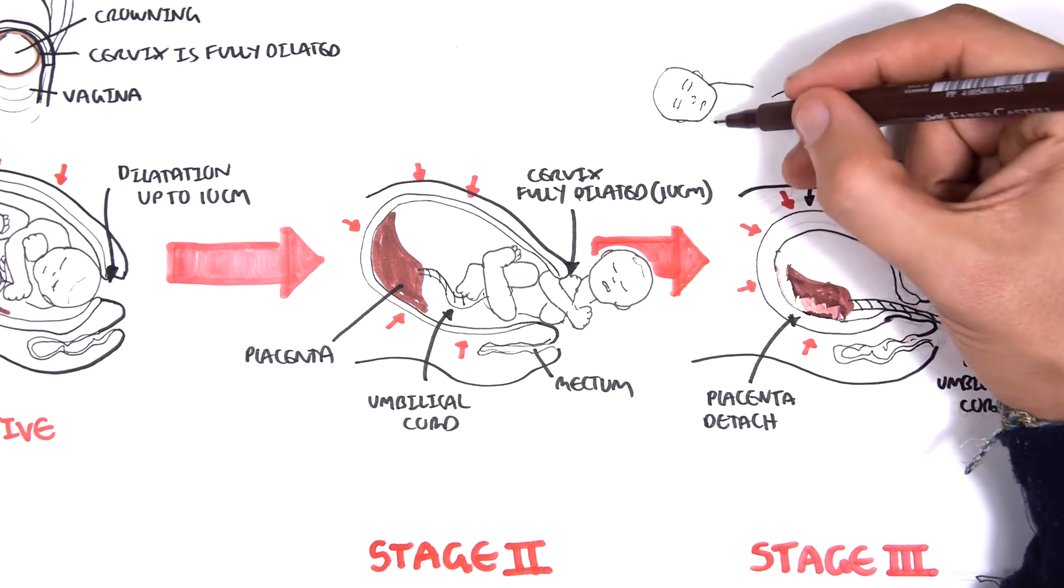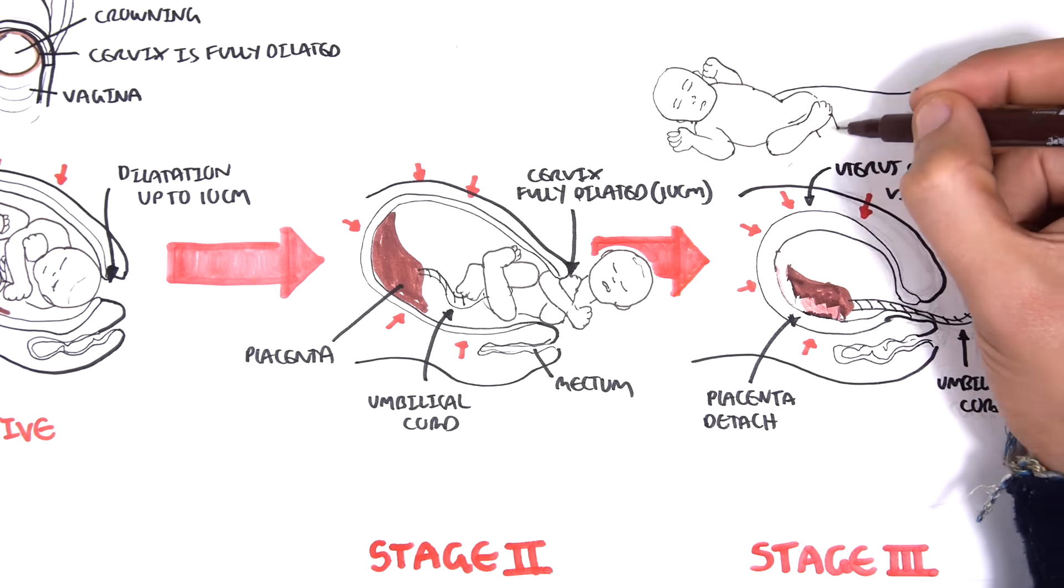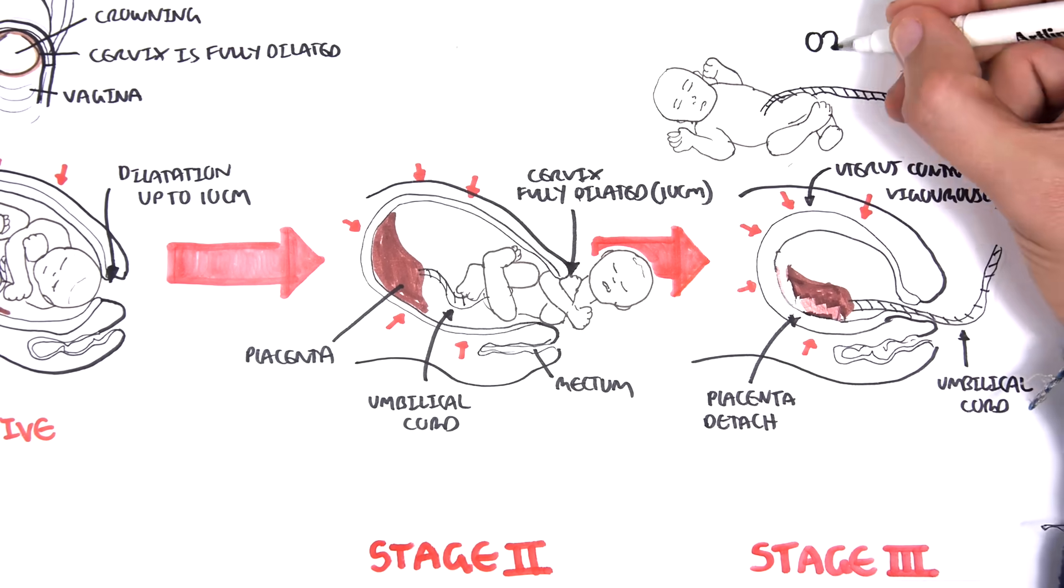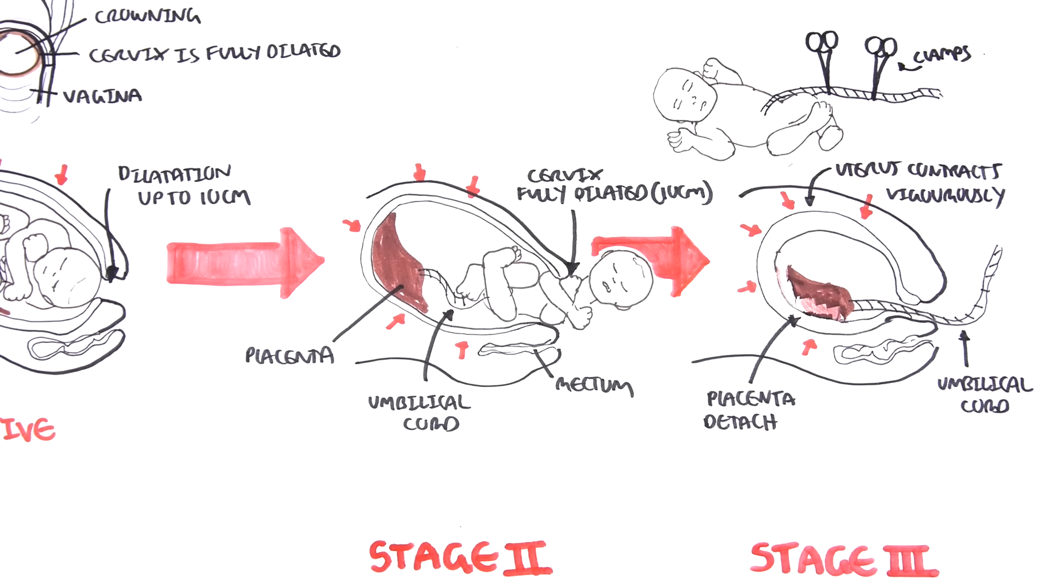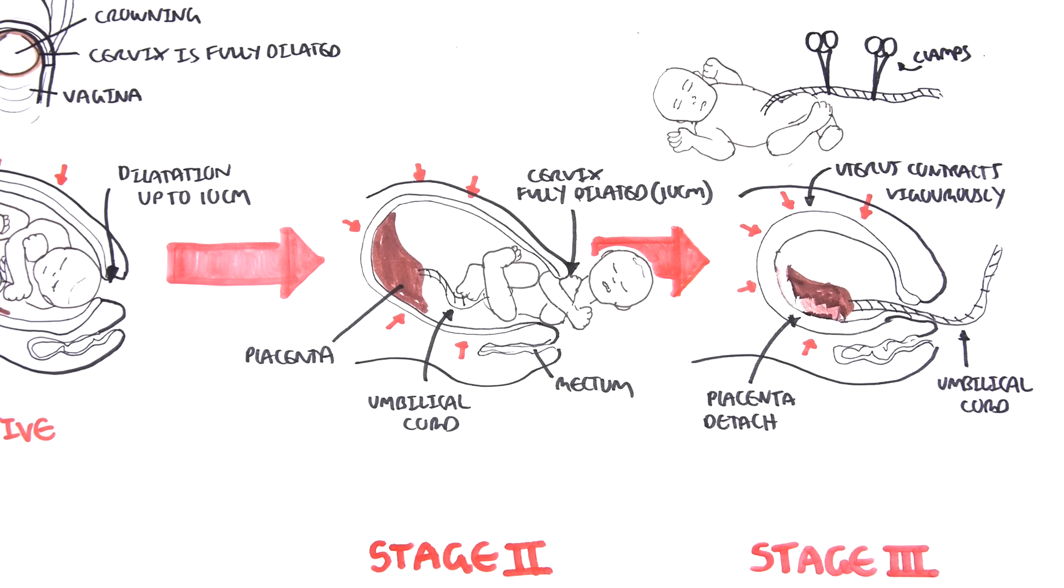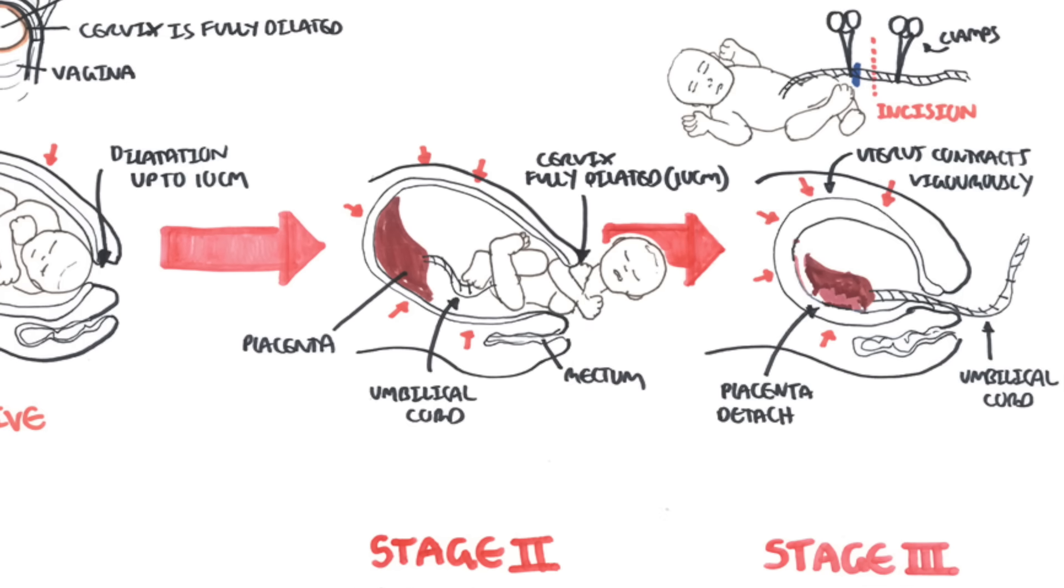Once the baby is out, clamps are put on either side of the umbilical cord and then the umbilical cord is cut. It is also routine to get bloods from the umbilical cord for analysis of pH. Blood is taken from the umbilical artery and umbilical vein.